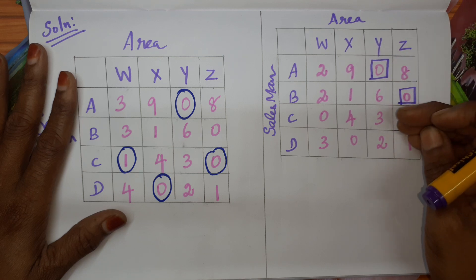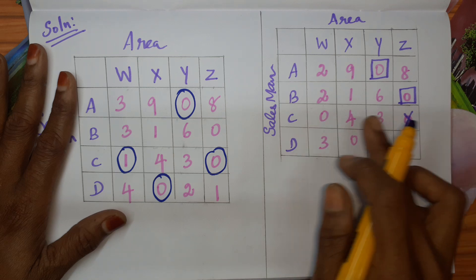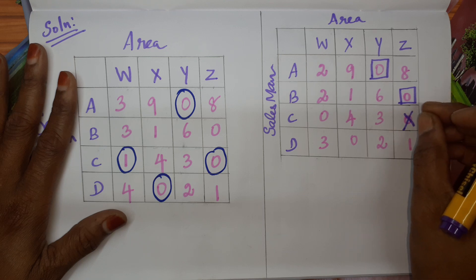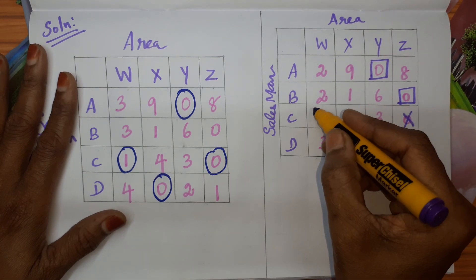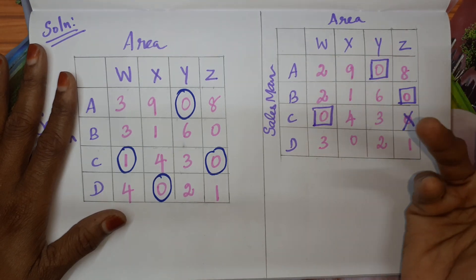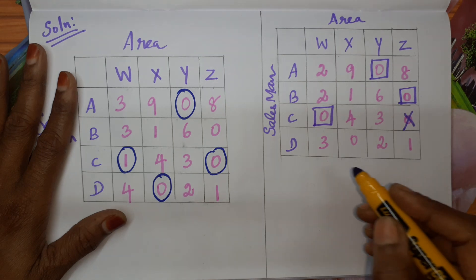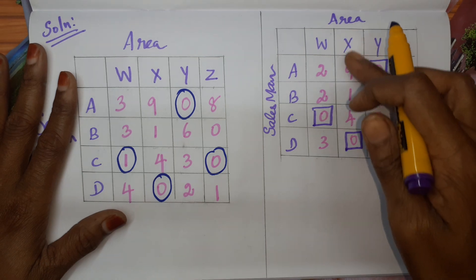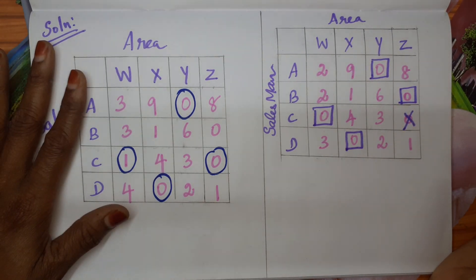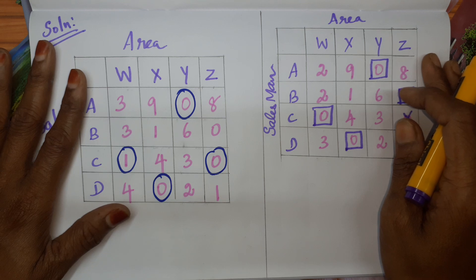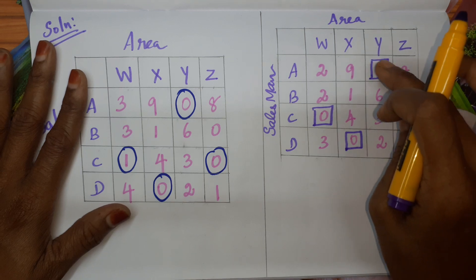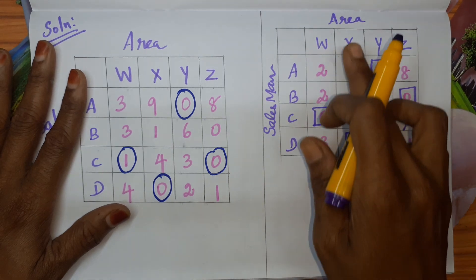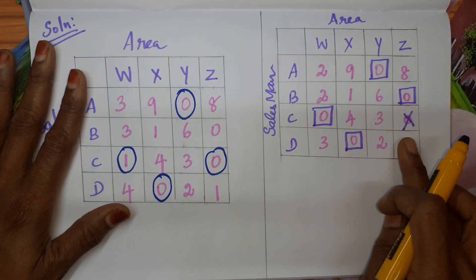Moving on to the next row: it originally had two zeros but one has been crossed out, so only one zero remains and we can assign it. In that column there are no other zeros. The last row also has one zero, so we make an assignment there as well. After this step, check whether every row and every column has exactly one assigned zero — first row, second row, third row, fourth row, and all four columns each have one assigned zero. It is done.